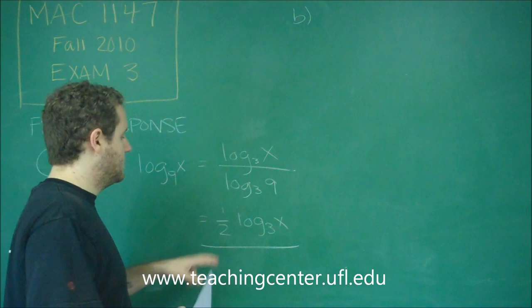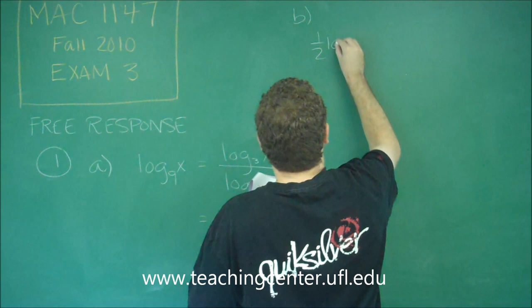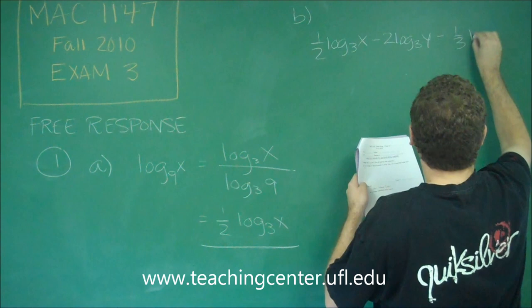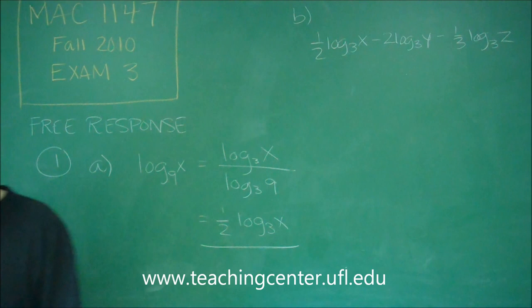The first thing is let's convert the first one, which is log base 9, to log base 3 using what we just did. So we have 1 half log base 3 of x minus 2 log base 3 of y minus 1 third log base 3 of z.